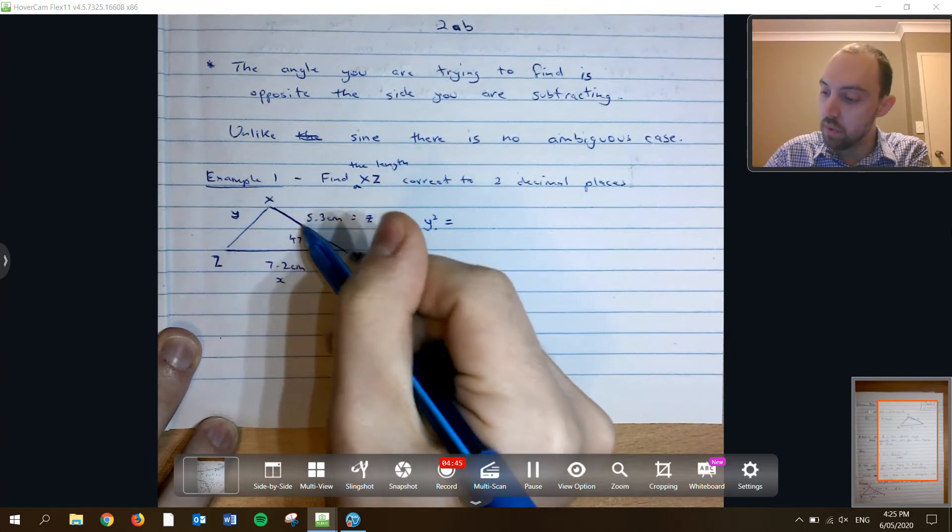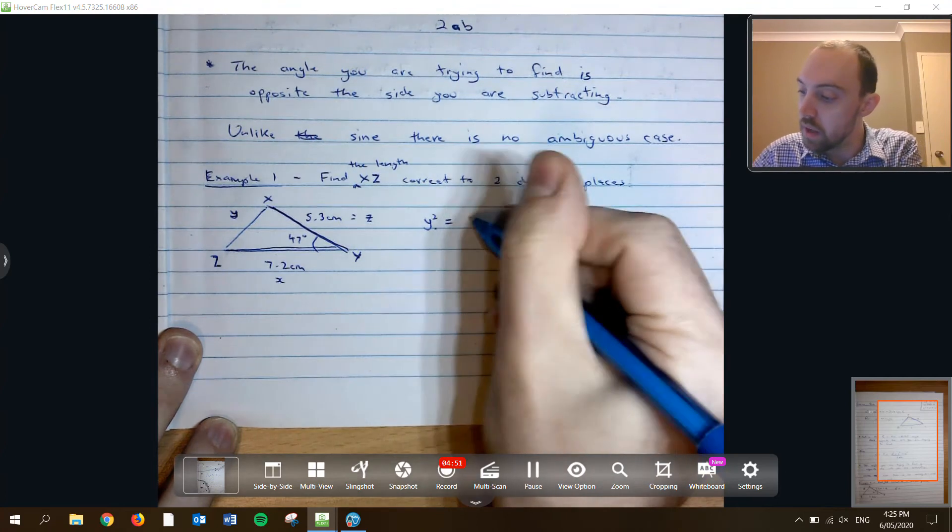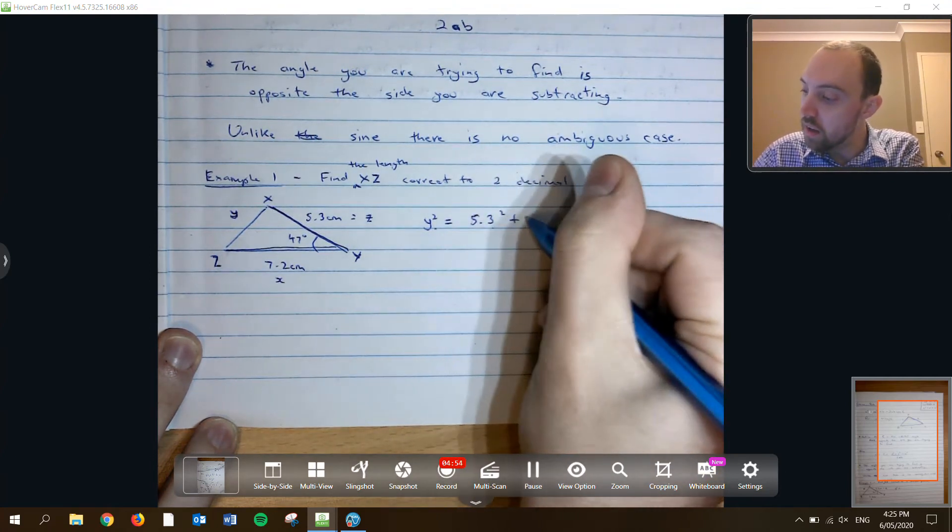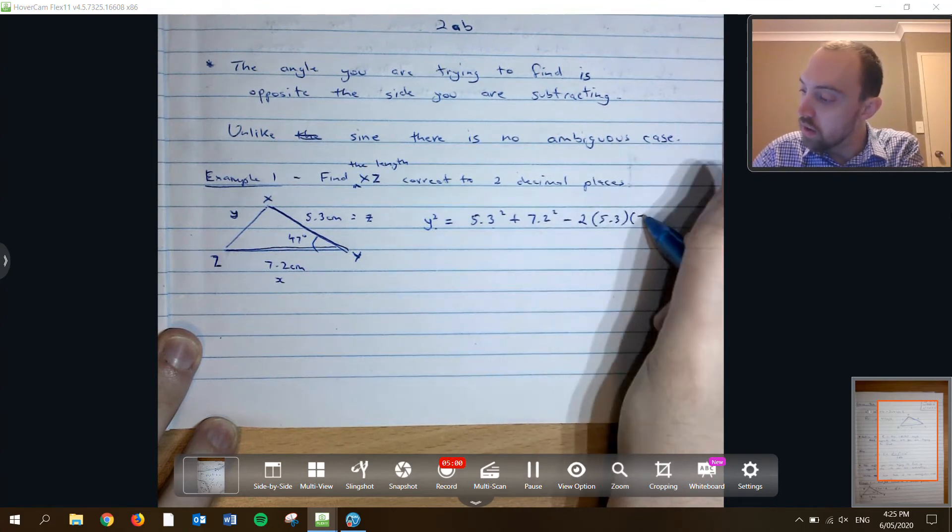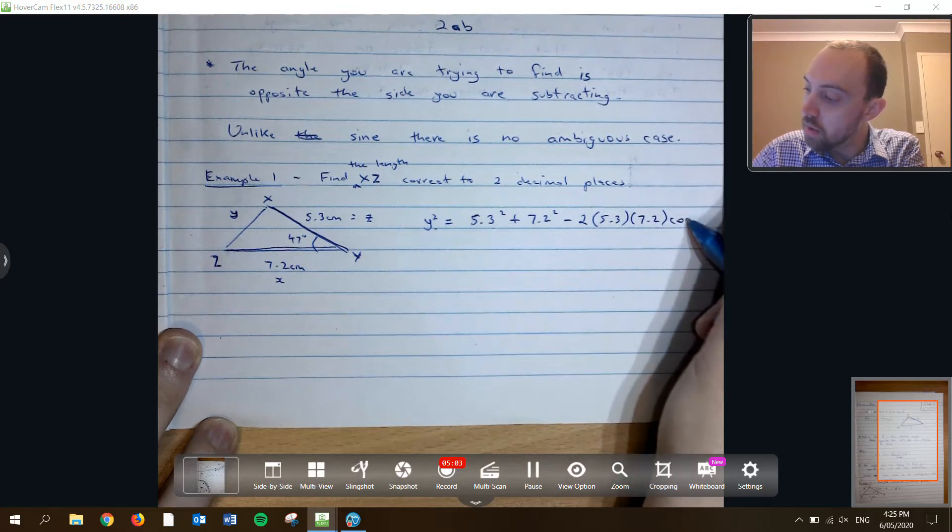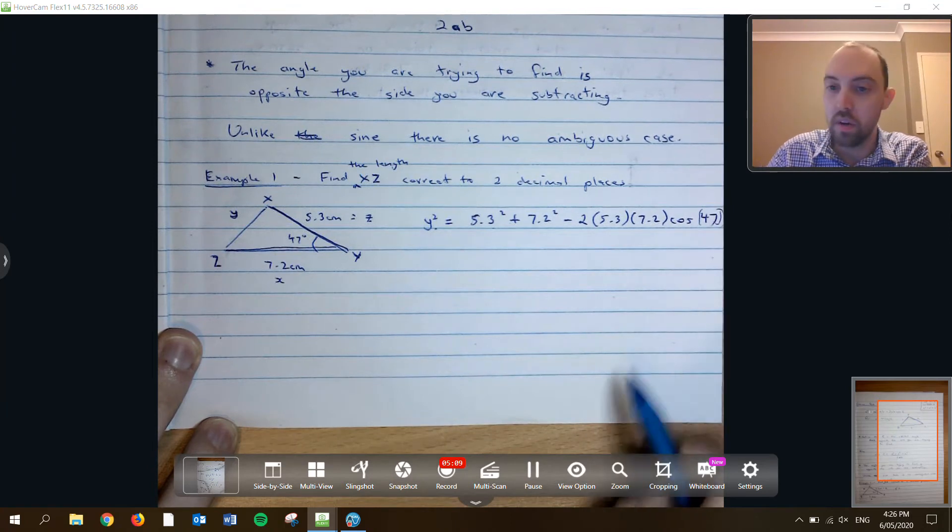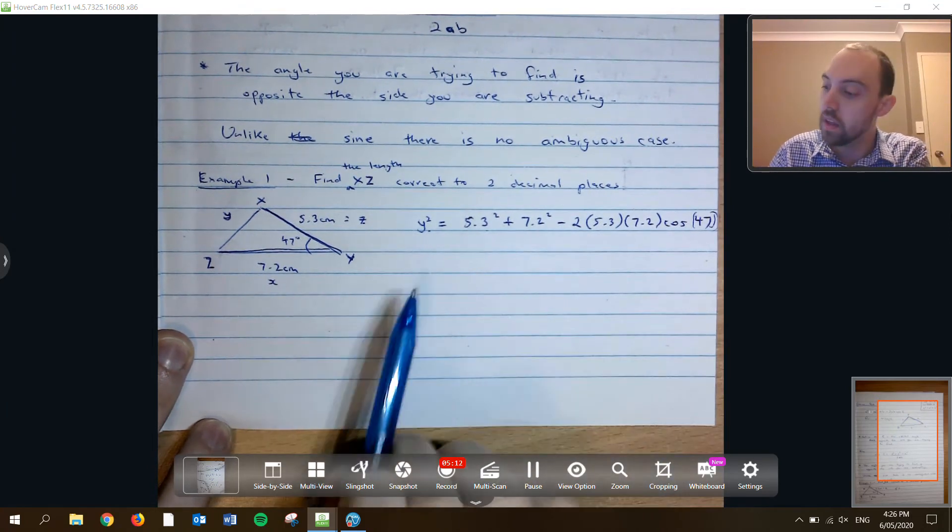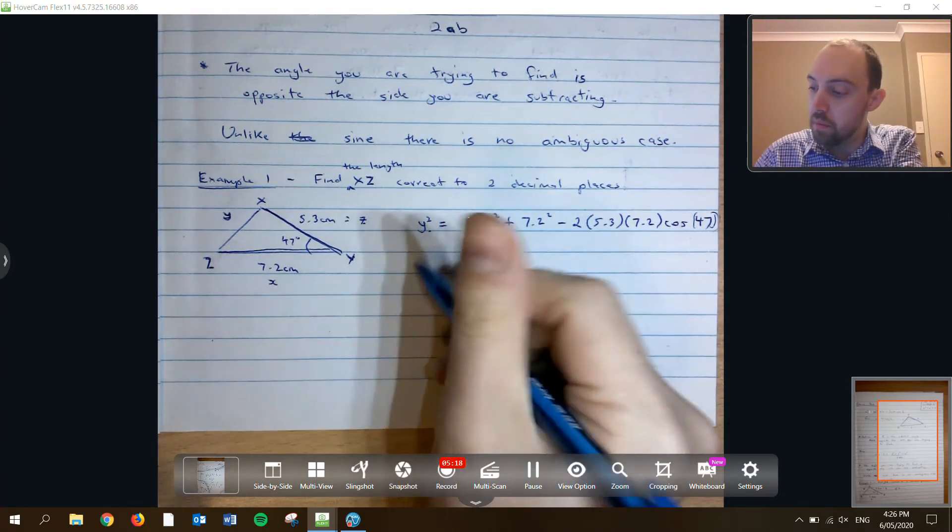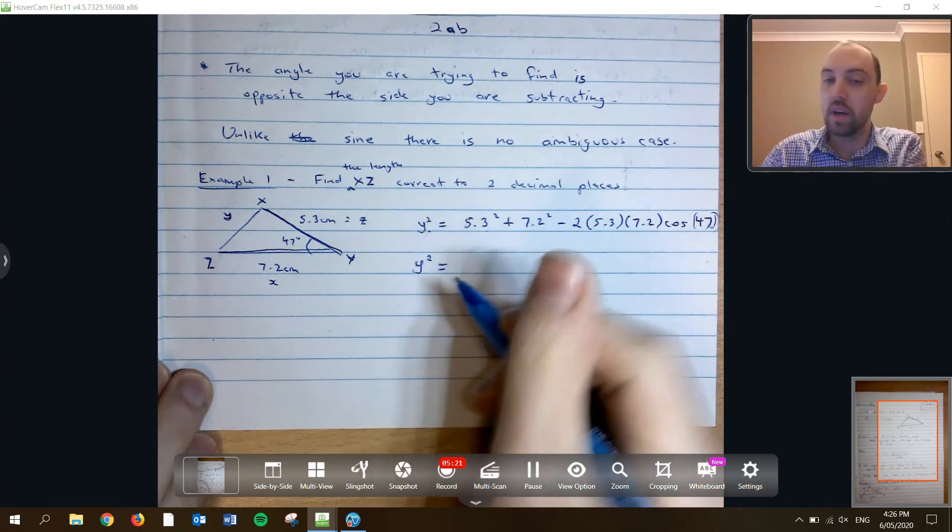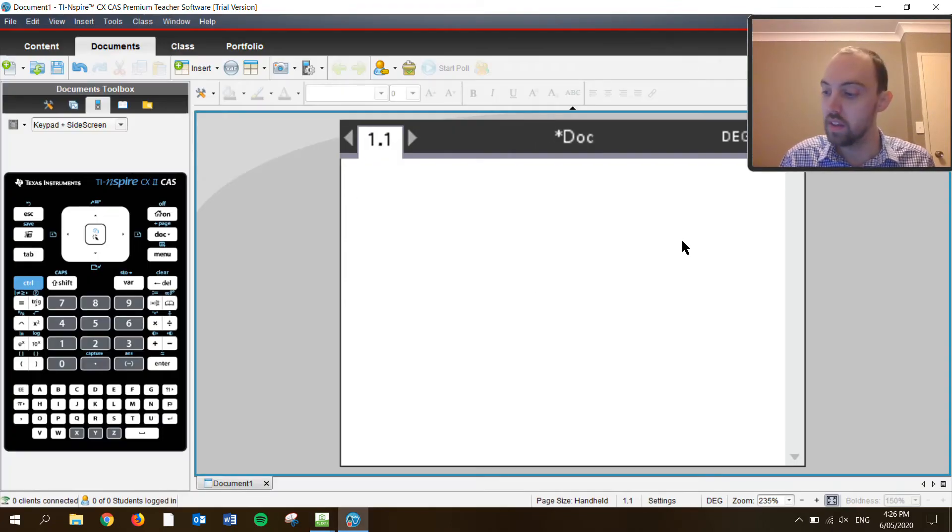The two sides around it are 5.3 and 7.2, making those two a and b. So, we have 5.3 squared, and 7.2 squared, take 2 lots of those two sides, times by the cos of 47 degrees. I'm going to remove the edge of my page there. You could work out the whole thing, but remember that this is going to be y squared. So, once we have got that answer, then we're going to need to square root it to get the actual value.